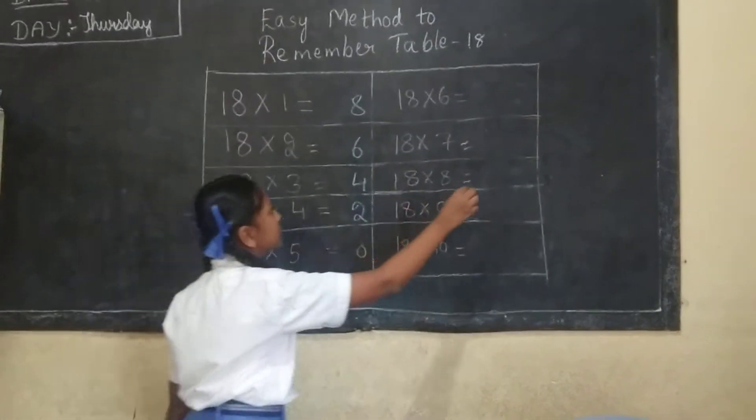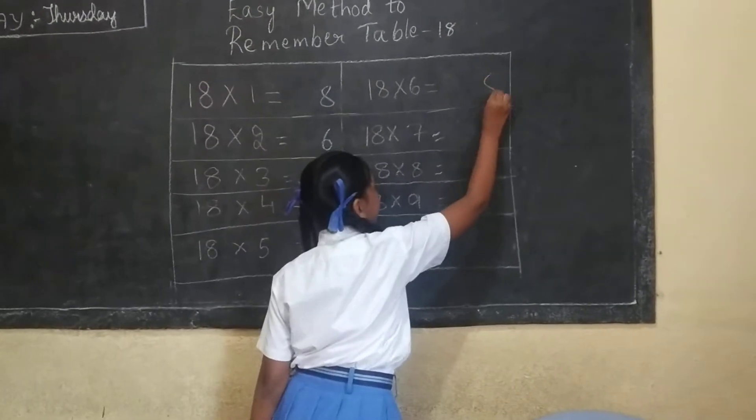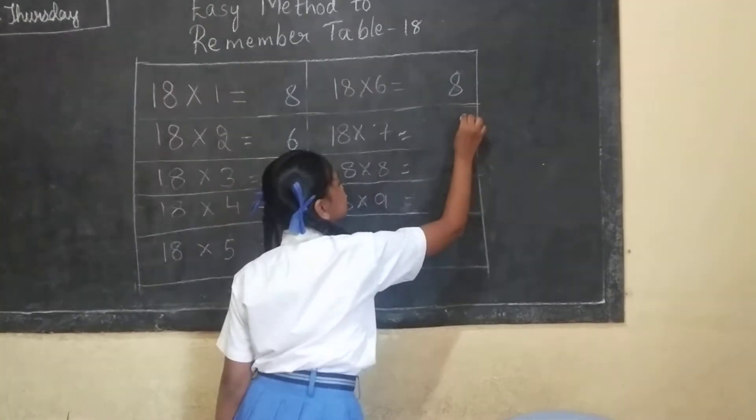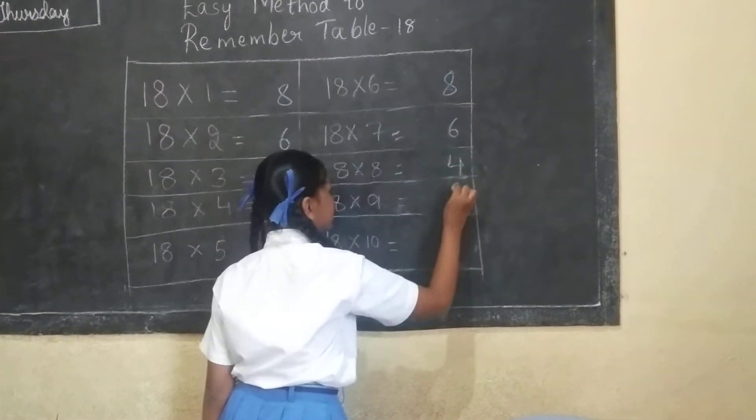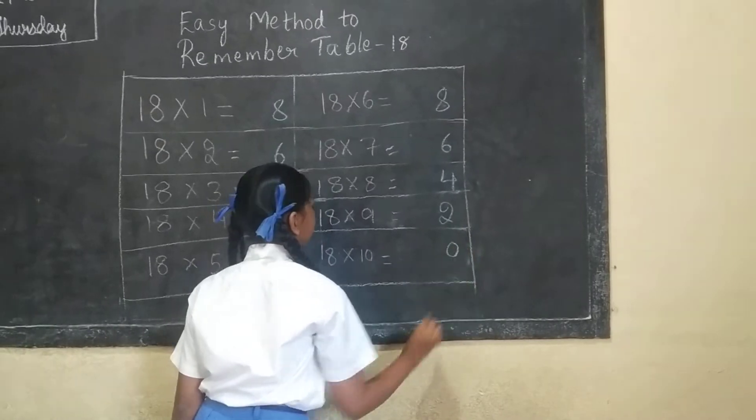And again we should write here: 8, 6, 4, 2, 0.